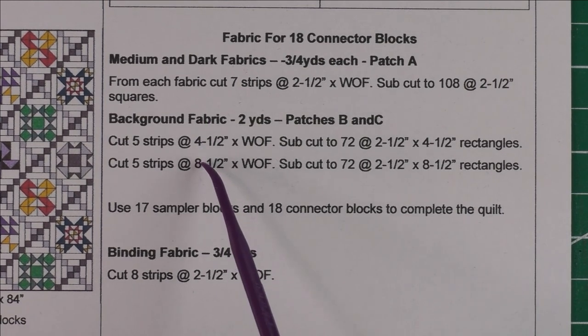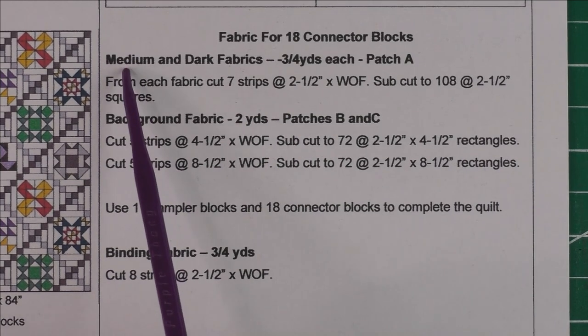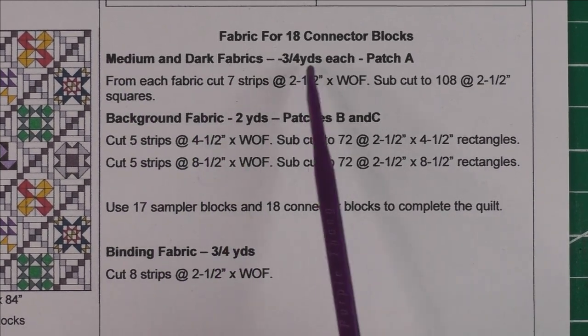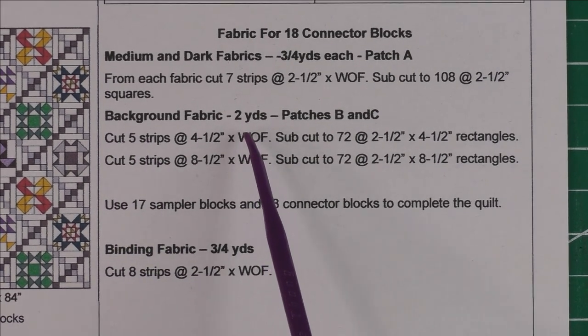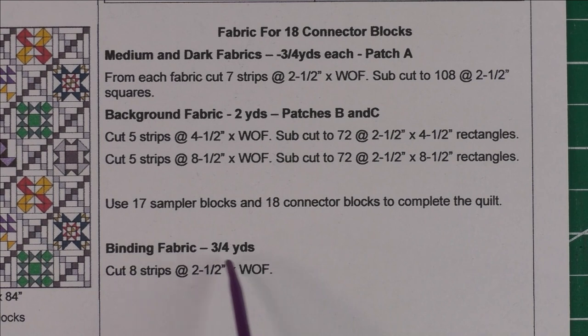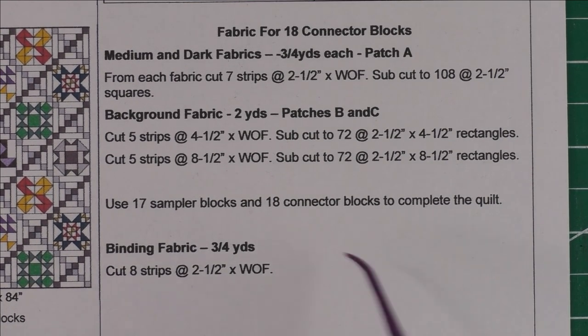From the dark and medium fabrics, you'll need three quarter yards each, and from the background fabric you'll need two yards. Then the binding fabric is three quarter yards to finish that quilt. Those are there if you need them.